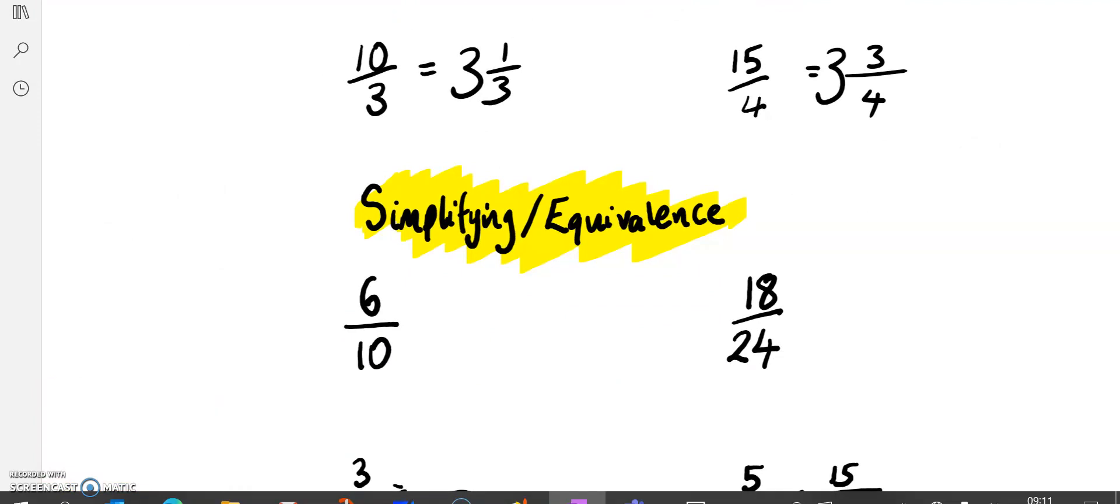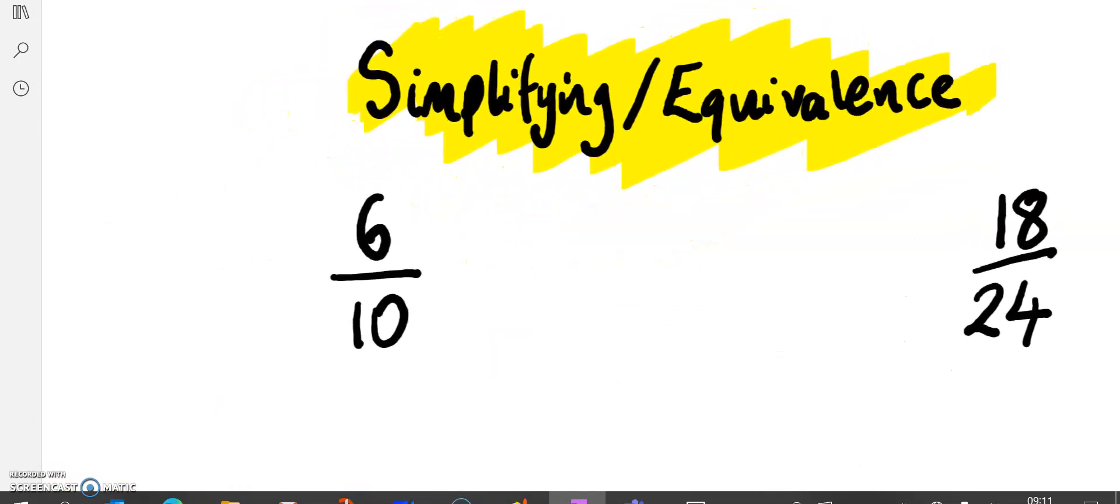We then looked at simplifying fractions and equivalent fractions. To simplify a fraction means the fraction will have the same amount, it will just look slightly different, but it's going to represent the exact same thing. It's going to be a bit simpler. What we do here is we look at this first fraction, 6 tenths, and we think, what's the highest common factor of 6 and 10? What's the biggest number that goes into 6 and 10? Both of these are in the 2 times table. So because of that, we can divide both by 2. When we divide both by 2, we can simplify this to 3 fifths. We always want to write a fraction in its simplest form. It's much easier to think about 3 out of 5 equal things rather than 6 out of 10 equal things.